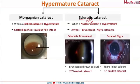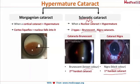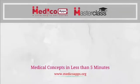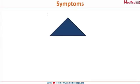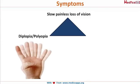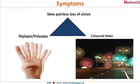Sclerotic cataract is of two types: brunescent and nigra — both names suggest colors. Brunescent means brown color; nigra means black color. Cataracta nigra is the hardest type of cataract, and brunescent cataract is the second hardest. The symptoms of cataract include slow painless loss of vision, diplopia or polyopia, and colored halos.